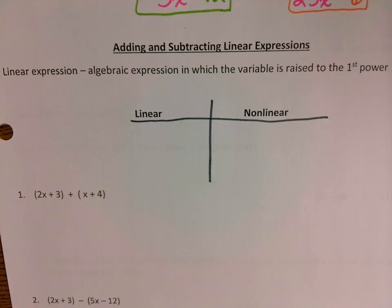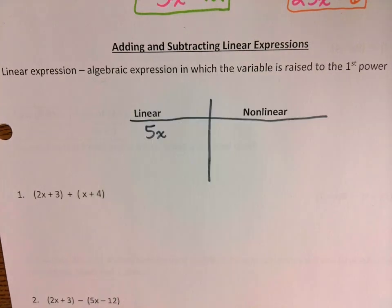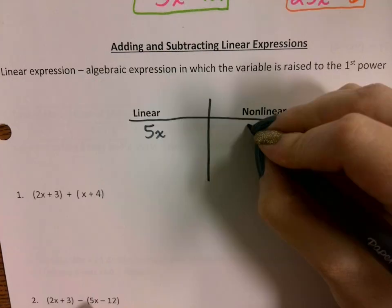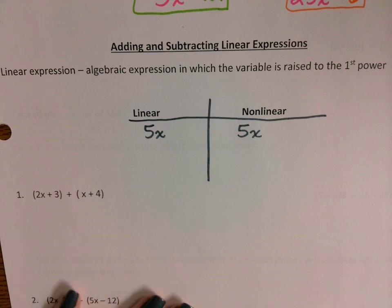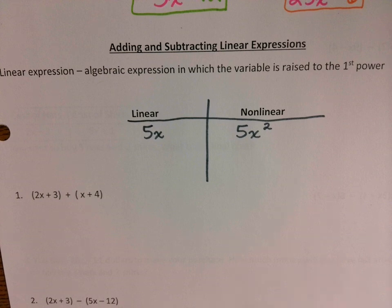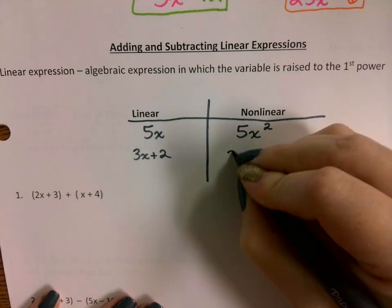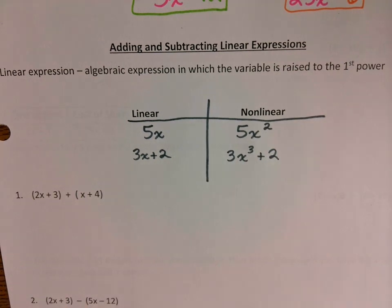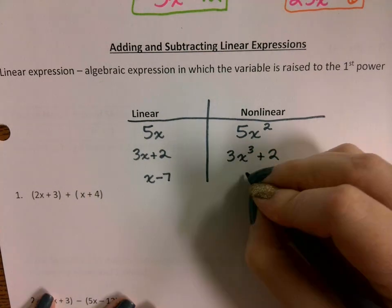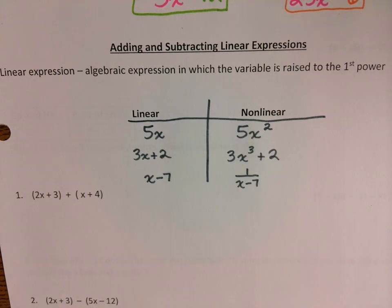I'll give you examples of linear versus non-linear expressions. 5x is linear, but 5x squared is no longer linear. 3x plus 2 is linear, but 3x cubed plus 2 is non-linear. If x is in the denominator — like 1 over (x minus 7) — that is also considered non-linear, whereas x minus 7 by itself is linear.